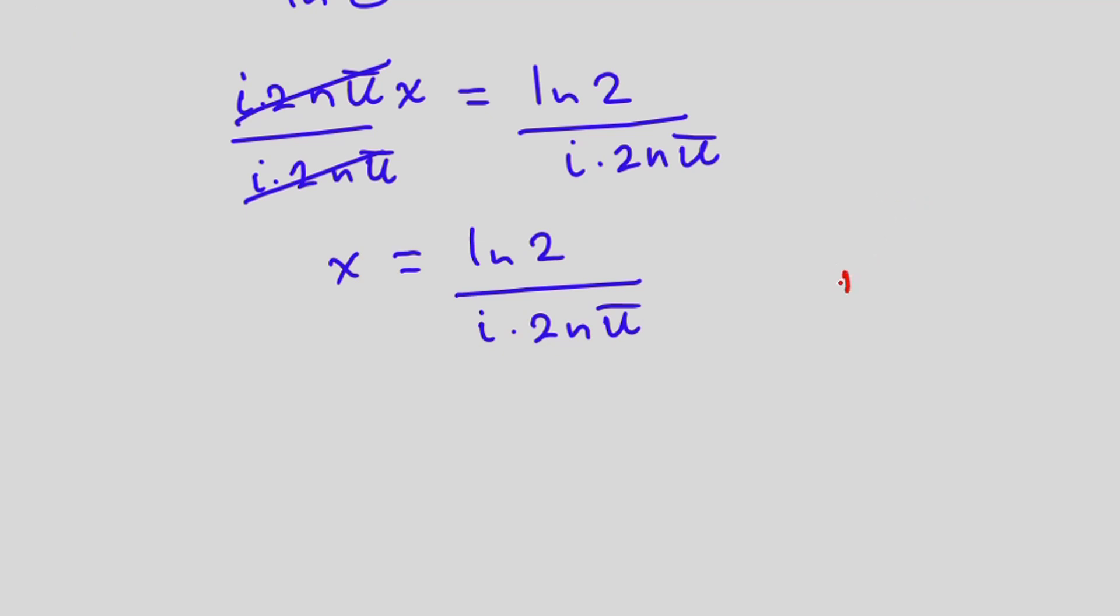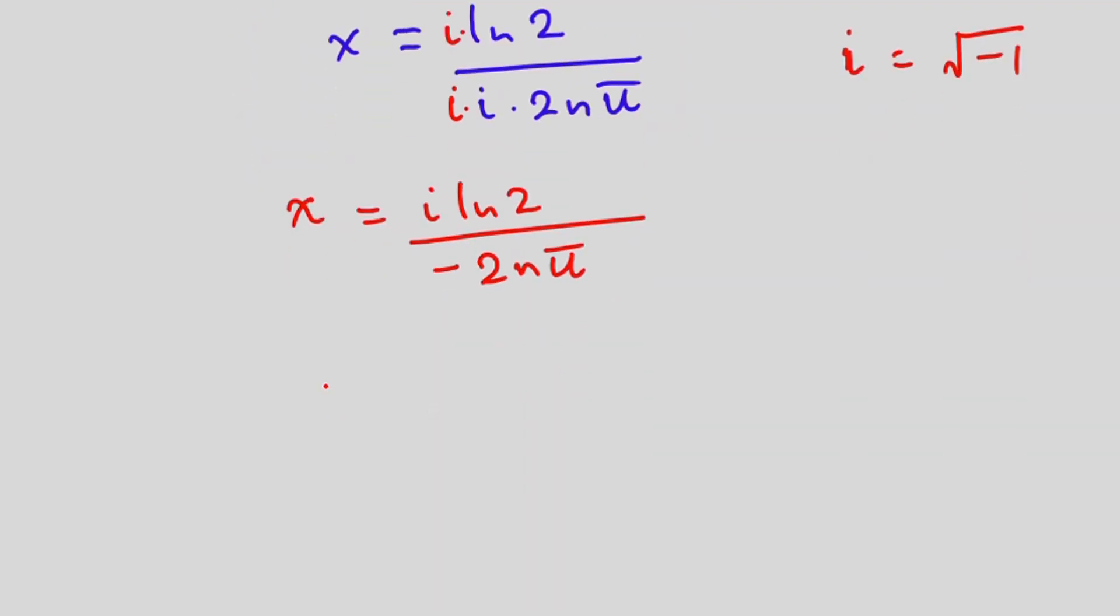But remember that i is equal to square root of negative 1. But we don't want square root to be in the denominator. So let's go ahead and multiply the numerator and the denominator by i. So that we get x is equal to ln of 2 times i divided by i times i, that is negative 1 times 2n pi. And we can rewrite this as x is equal to negative i ln of 2 divided by 2n pi. Note that n is never equal to zero. And this is our final answer.